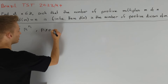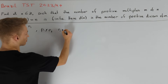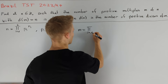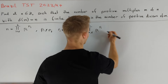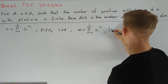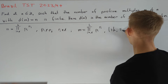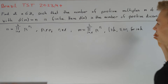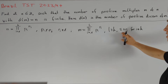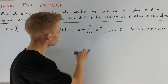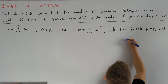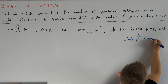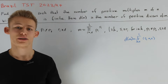For a multiple m of n, we know that m must be of the form product for i from 1 up to l of pi to the power of si, where l is greater than or equal to k, si is greater than or equal to ri for i less than or equal to k, the pi are pairwise distinct, and si is greater than or equal to 1. To write down the number of divisors of m, we use the formula: d(m) equals the product for i from 1 to l of (si + 1).